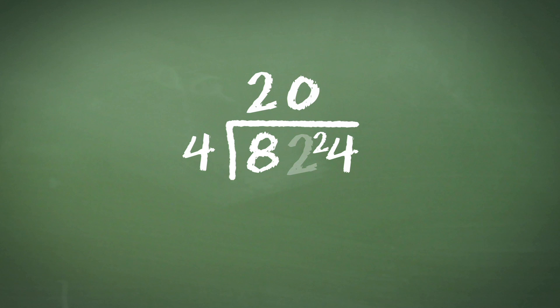The 2 carried across means that rather than dividing by just 4 in the units column, we are now dividing by 24. 24 divided by 4 is 6. So we write in this number in the units column.